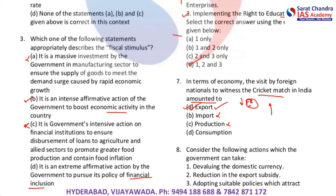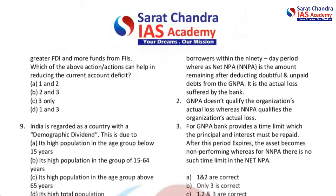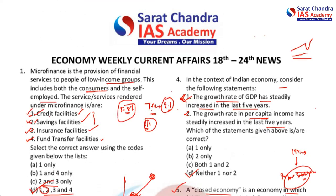Next question: consider the following actions the government can take — one, devaluing the domestic currency. The question is about which actions can help in reducing the current account deficit. The current account deficit involves net foreign remittances, your export bill, and your import bill.